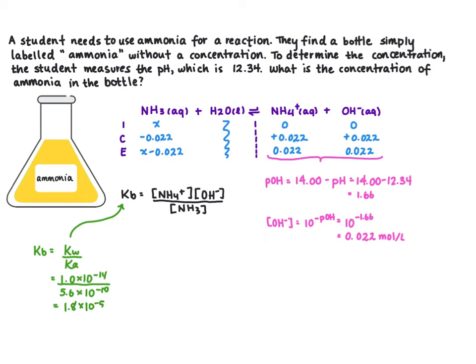So we can plug that into our expression. 1.8 times 10 to the negative 5 equals 0.022 squared over x minus 0.022.